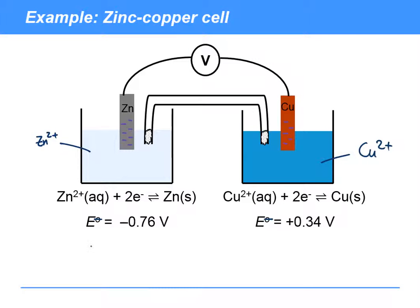So we can write that as E cell. And providing we're working under standard conditions, then we can use the standard signal. So E standard cell. Well, how are we actually going to work that out?